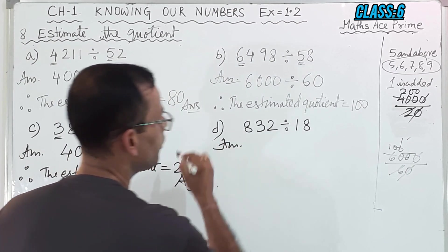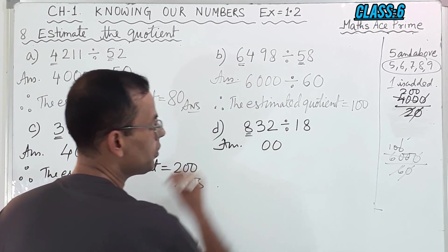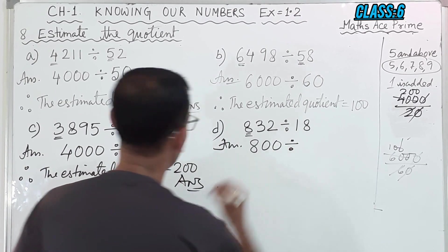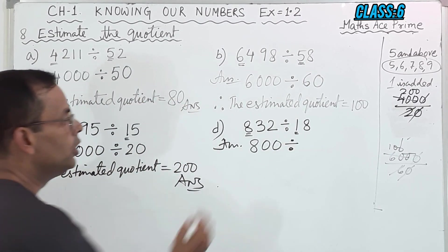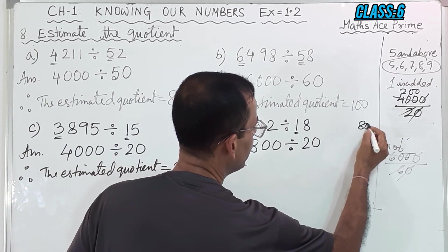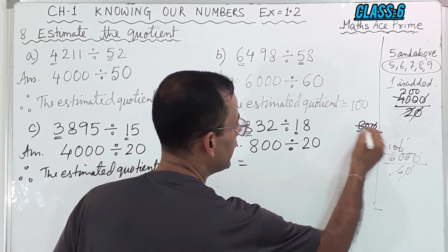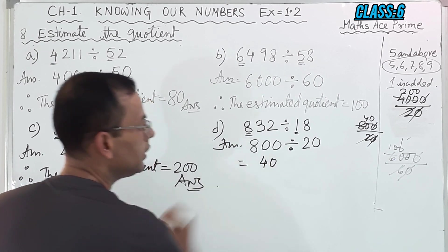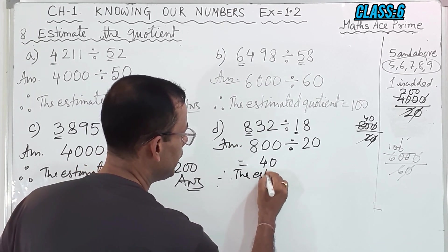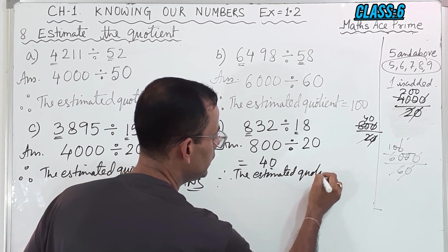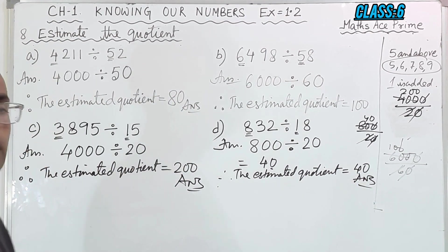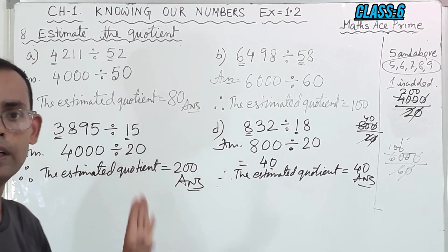Now for answer D: I will round off here. For the last two digits, I will put 0, 0. 8 will remain 8 only because the next digit is 3. And divided by — I will round off here, so this becomes 0 and 1 becomes 2, giving 20. So 800 divided by 20: cancel zeros, then 2, 4's are 8. So you get 40. Therefore the estimated quotient is equal to 40. A, B, C, D — I think you have understood.